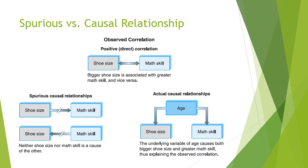Spurious causal relationships mean neither shoe size nor math skill is a cause of the other — math skill does not cause shoe size to change, and shoe size has no association with math skills. The actual causal relationship shows an underlying variable called age that causes both shoe size and math skills to increase. So even though we see that as shoe size gets bigger, math skills get bigger — what's really happening is age. As age increases, shoe size gets bigger; as age increases, math skills get bigger. It's not really about shoe size and skills — it's about age.